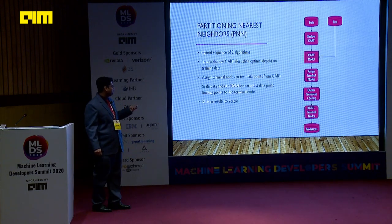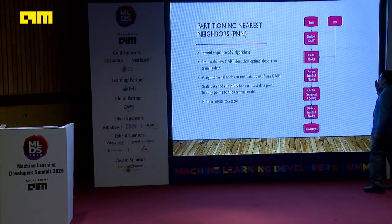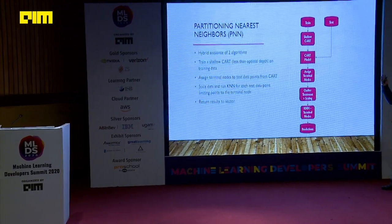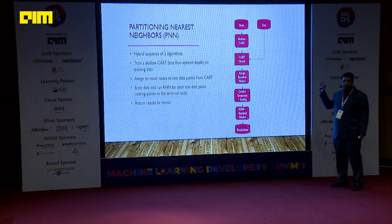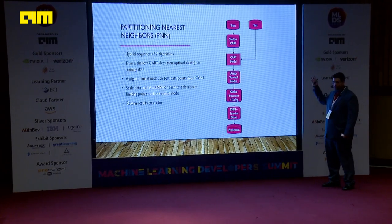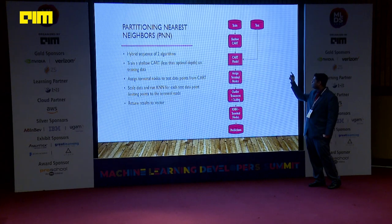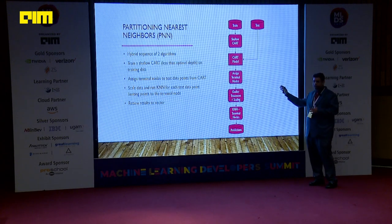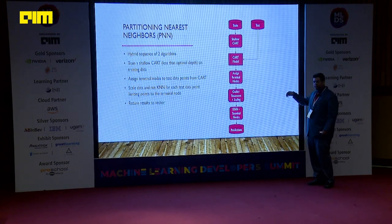Our algorithm is essentially a hybrid of CART and KNN. You split your data into train and test, and on your training data you apply a shallow CART — a tree with less depth than optimal CART — which gives you the terminal nodes. When running test observations, you find to which terminal node each test observation belongs using the CART. After assigning terminal nodes, you perform outlier treatment and scaling of the training data for each terminal node, then run a KNN regression to get the predictions.